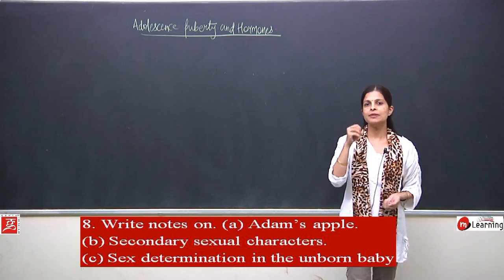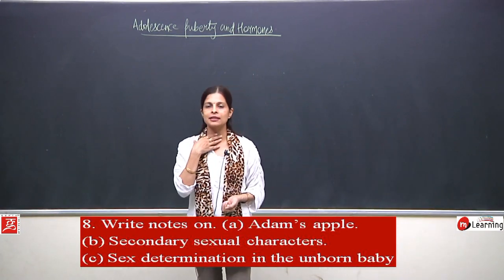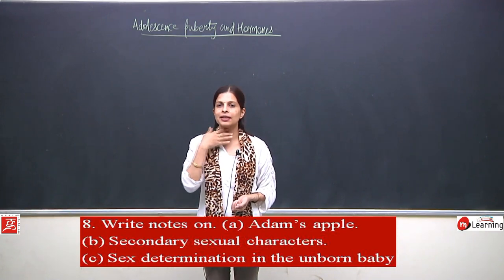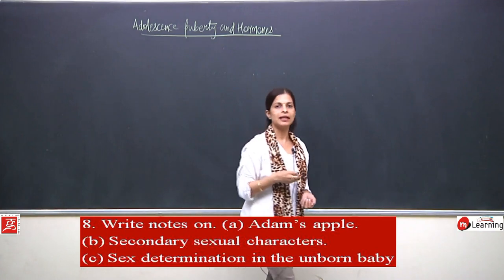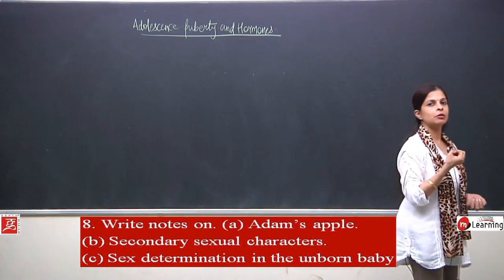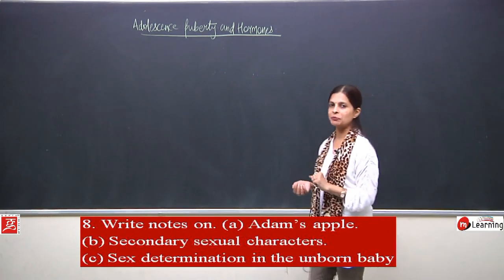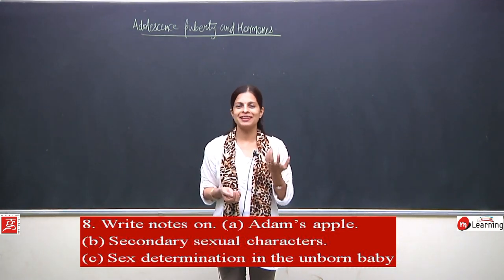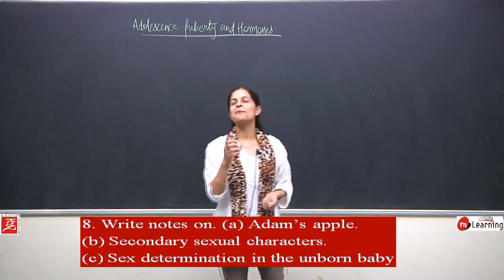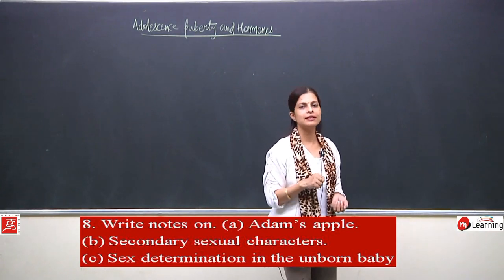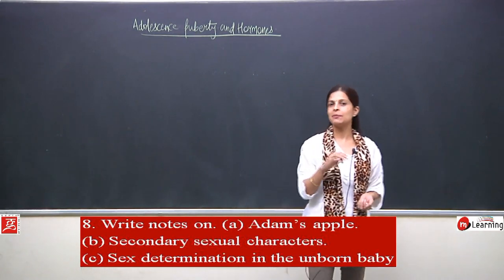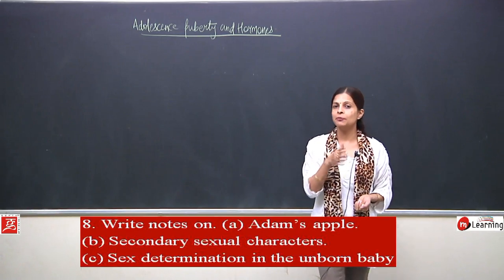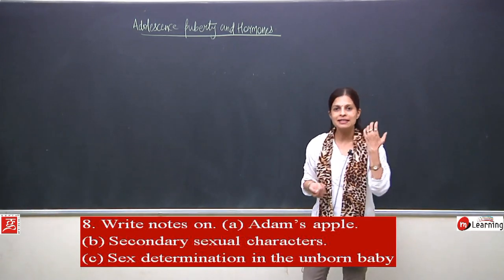In boys this voice box is quite visible and can be seen. The voice box is known as the larynx. So Adam's apple is when this voice box grows and becomes visible from outside. In boys, one small outgrowth is seen — it is bulged out. That is the reason their voice is a little thick and of low pitch. In girls it is not visible and the voice is very soft and melodious, of high pitch. Adam's apple is not developed in girls.